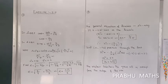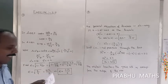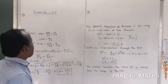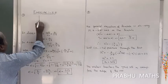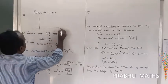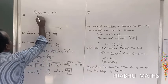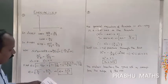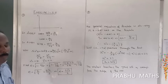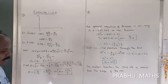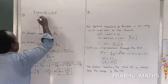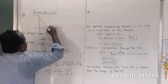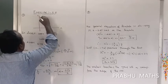A rod of length 1.2 meters moves with its ends touching the coordinate axes — first the x-axis, then the y-axis. The ends of the rod touch both axes. That is what is meant by the coordinate axes. That is the rod.